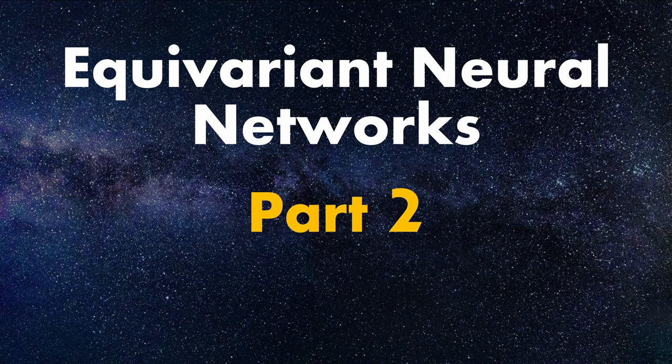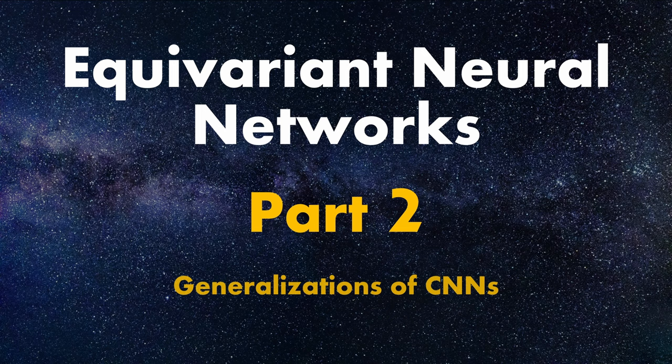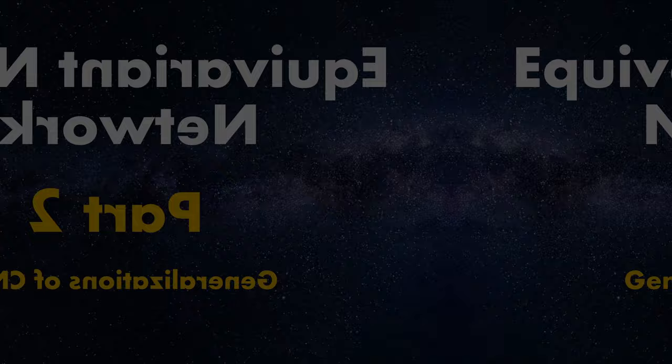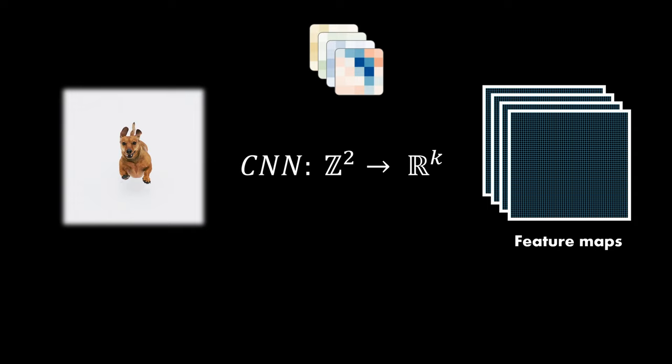I decided to extend this series with a part 3 and dedicate this video to generalizations of CNNs only. Equipped with some basic knowledge about group theory from last video, let's begin with general group convolutions by Taco Cohen and Max Welling. To start on the same page, recall that classical CNNs simply map pixels to feature maps, which are stacked based on the number of filters that are used.